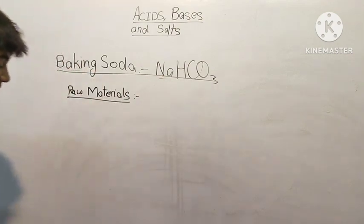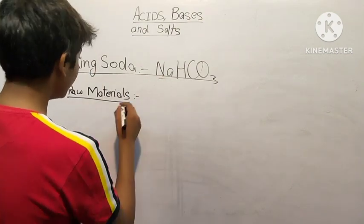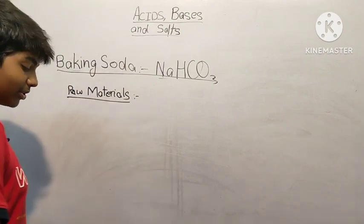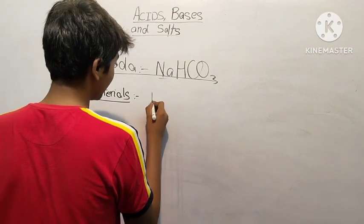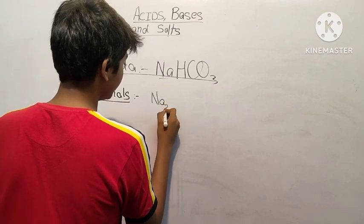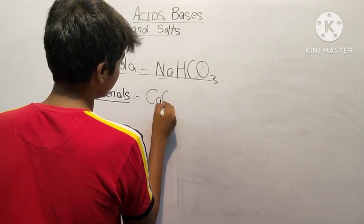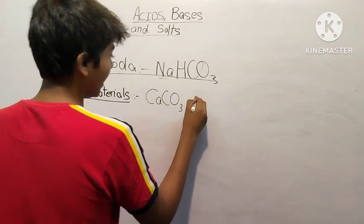NaHCO3 is the chemical name. Now let us see what the raw materials are. First, calcium carbonate, CaCO3, then sodium chloride NaCl.